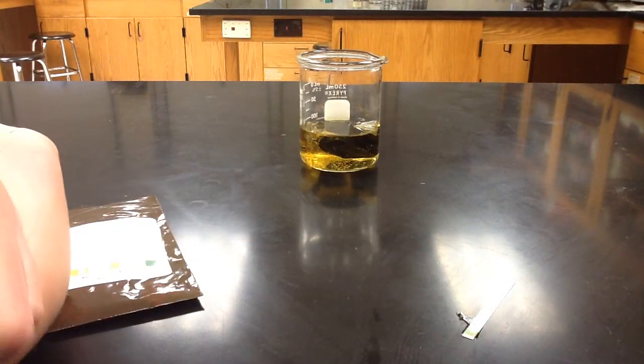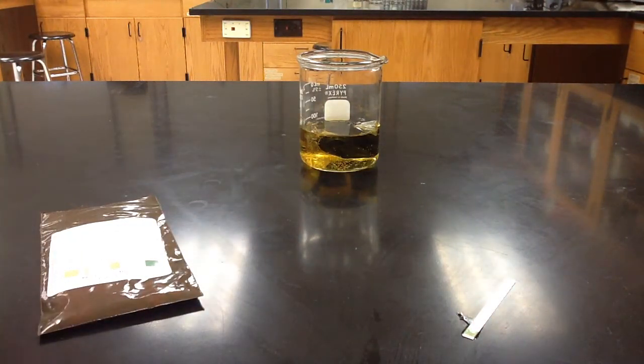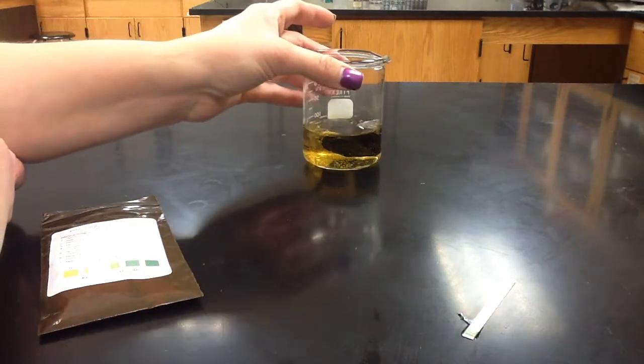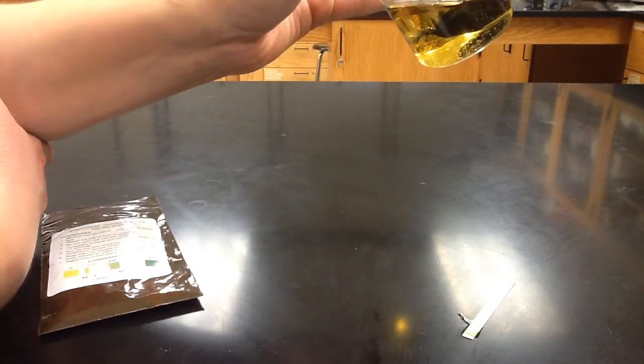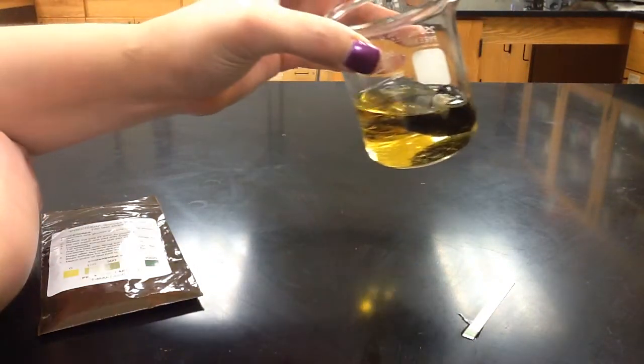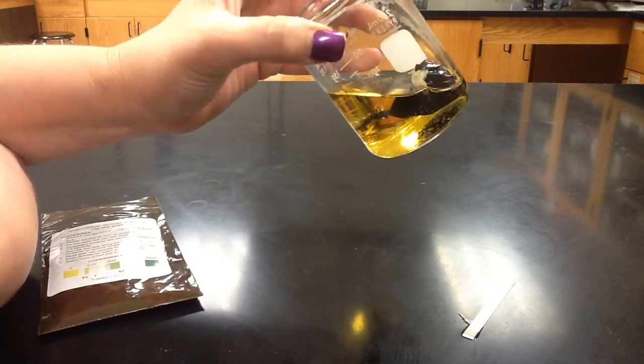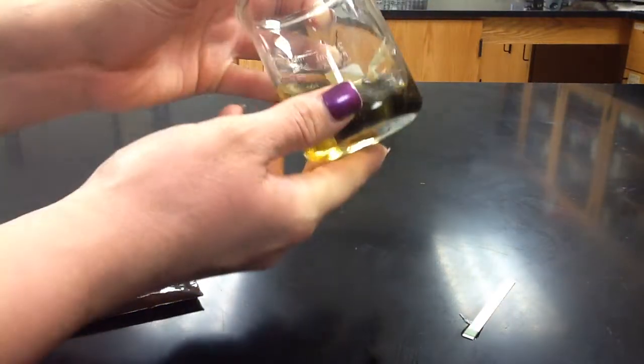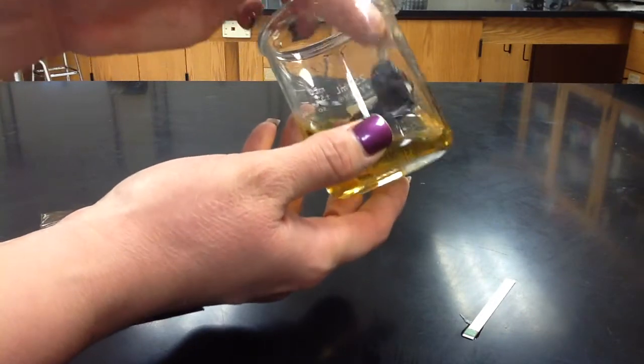And then the last thing we're going to look at is the beaker solution itself and the tube solution. And you can see the beaker has remained that yellowy color, and the tube inside is a dark blue.